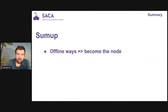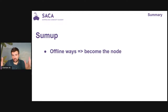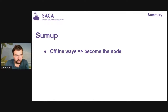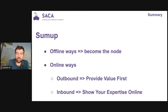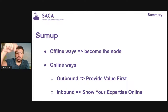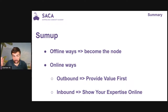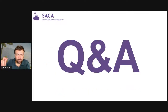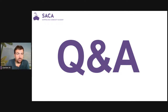To sum up: the offline hack is to create an association or be the node of a group — do that, it will reward you. Online: outbound means you need to provide value first. Inbound means you need to show your expertise online consistently, and then you'll see wonderful things happen — but it takes years. That's it for me, hopefully not too boring. Now let's do the Q&A.